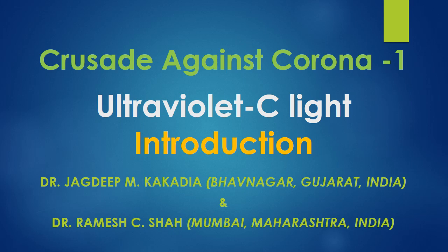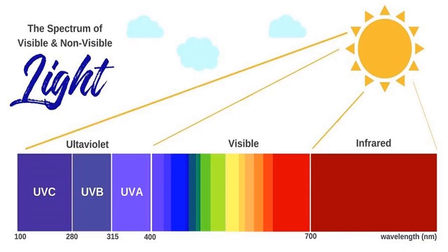Friends, before we proceed to know how to use UVC light to fight against the coronavirus, let us understand it in some depth. Three types of lights are generated from our sun: infrared, visible, and ultraviolet. UV light is again divided into three spectrums: UVA, with low energy wavelengths from 315 to 400 nanometers; medium energy UVB from 281 to 314 nanometers; and high energy UVC light from 100 to 280 nanometers.